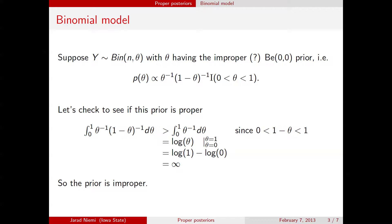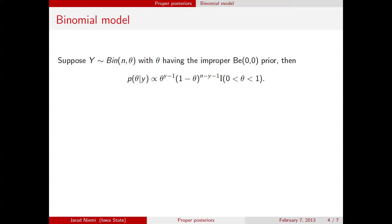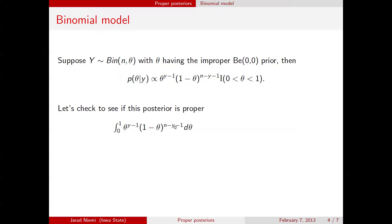Now the question becomes: we know that the prior is improper — what about the posterior? We can derive the functional form of the posterior given here. And now the question is, is it proper? So we take the integral over the support of theta. We use the same trick, but this time one minus theta is still less than one, but it's now being raised to a positive power, so long as y is not equal to n.